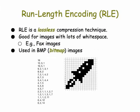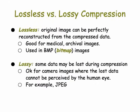Run length encoding is an example of lossless compression. It's good for images with lots of white space like this one — for example, fax images — and it's used in bitmaps. Lossless compression means that if you use it you can get the original image back perfectly. No data are lost. It's good therefore for medical and archival images, important images.